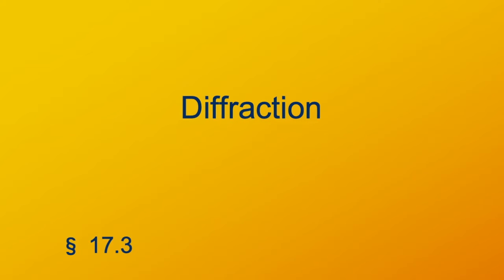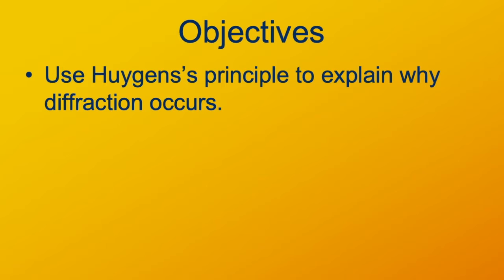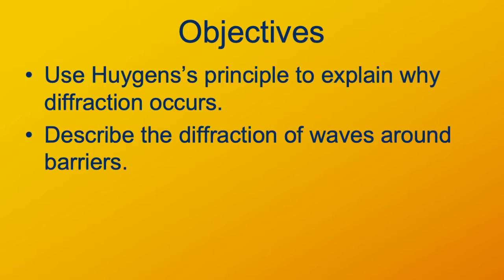An important property of waves that distinguishes them from particles is diffraction. Diffraction is basically a property in which waves interfere with themselves. What we're going to go over in this lecture is first the idea of Huygens principle to understand this kind of interference known as diffraction, and then use that to explain and fully characterize how diffraction works.